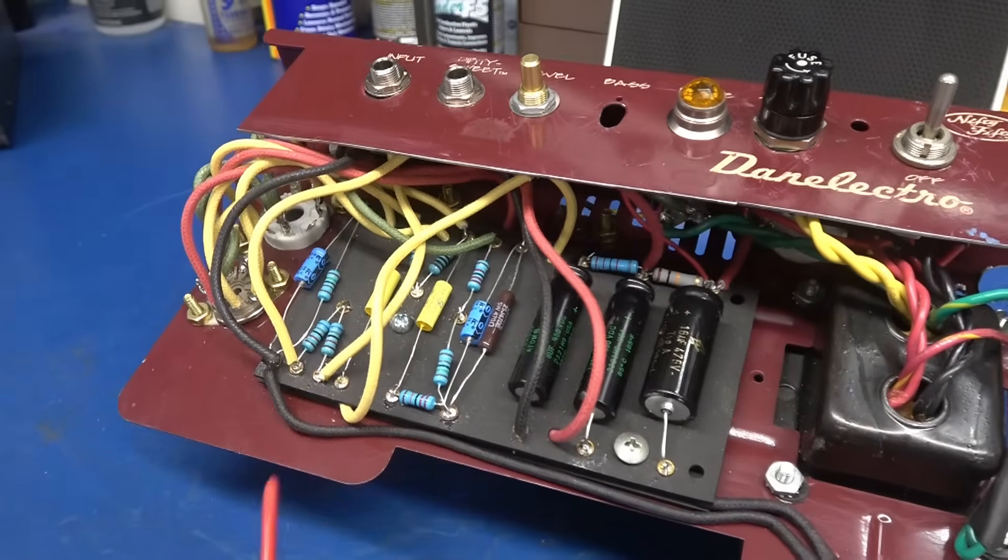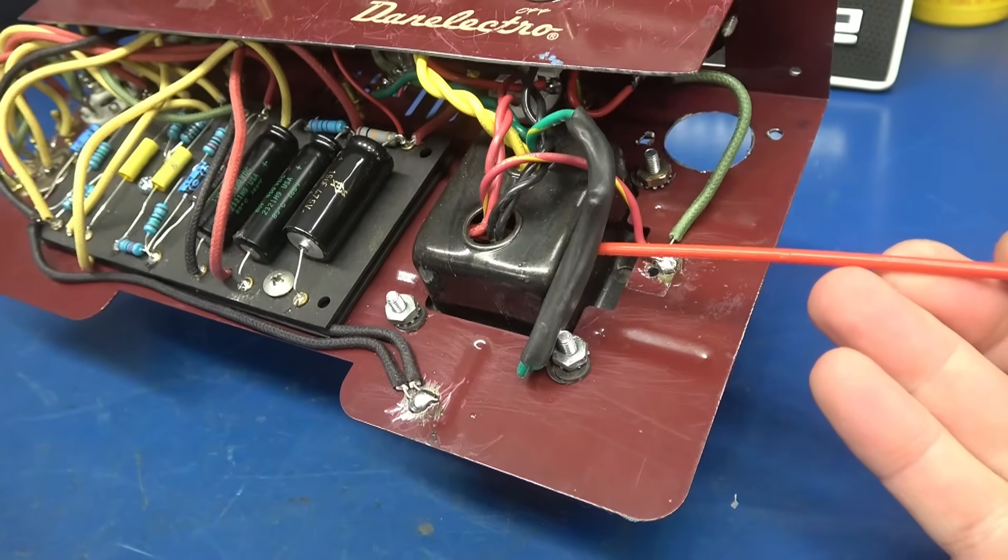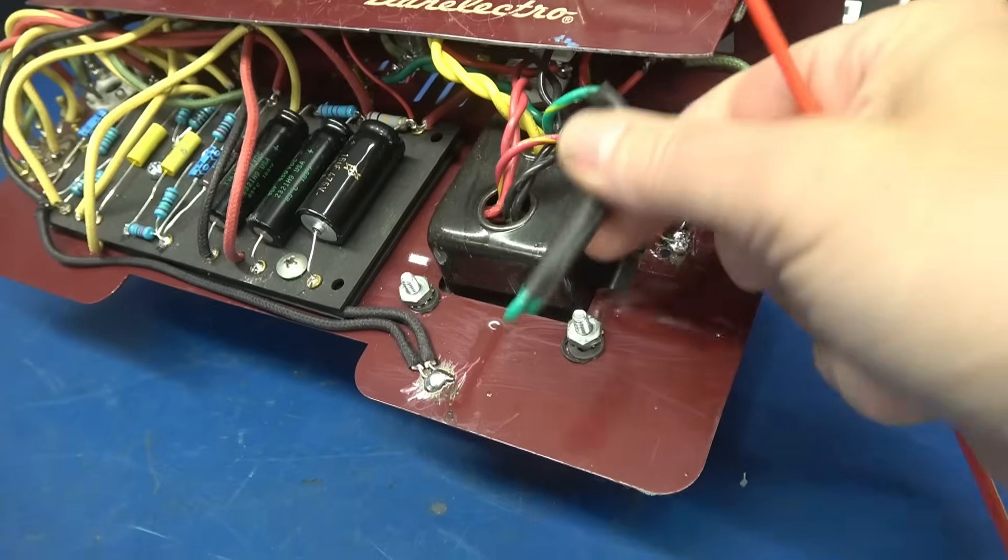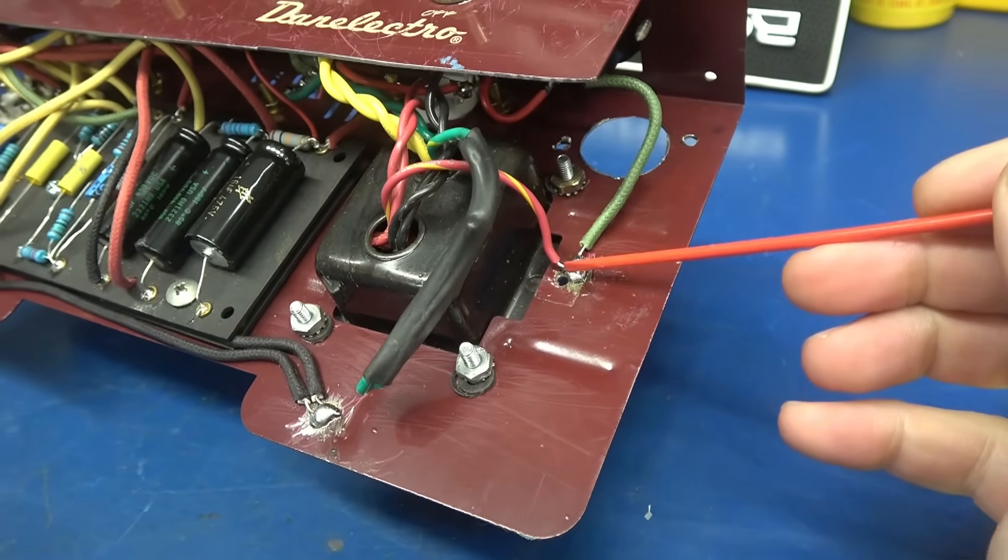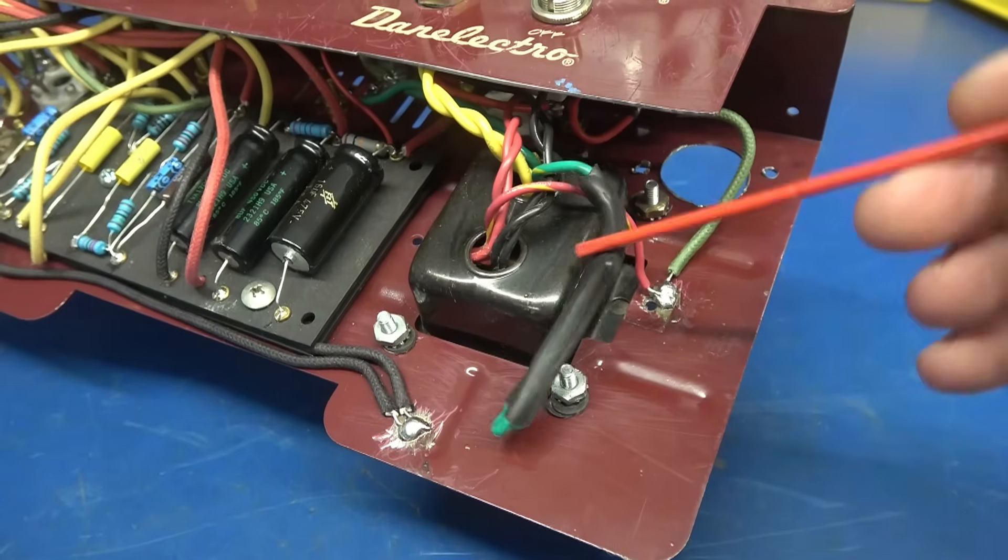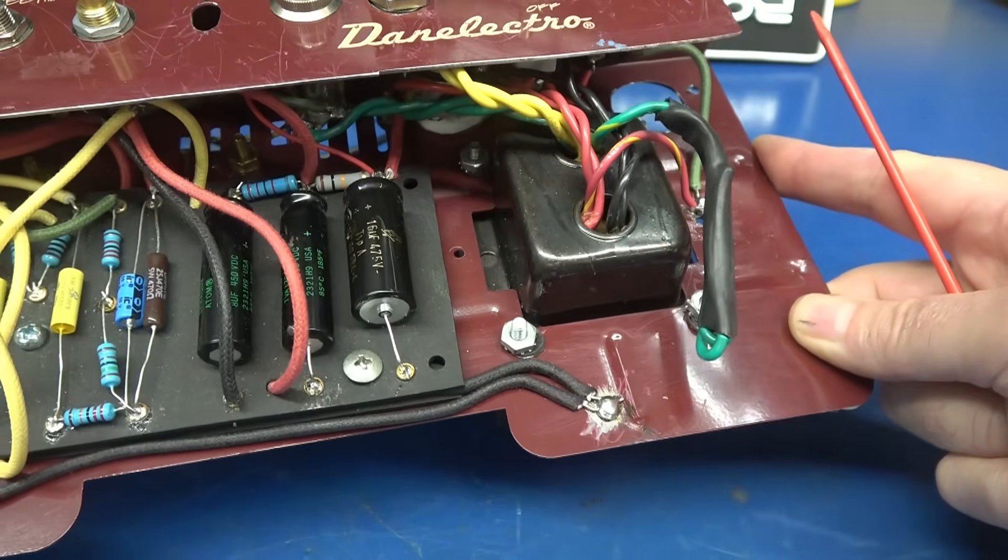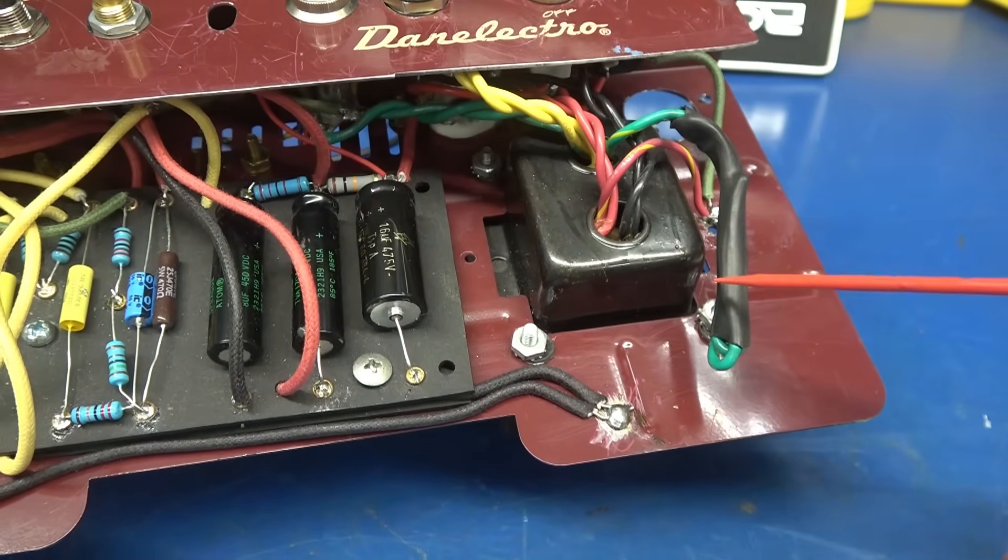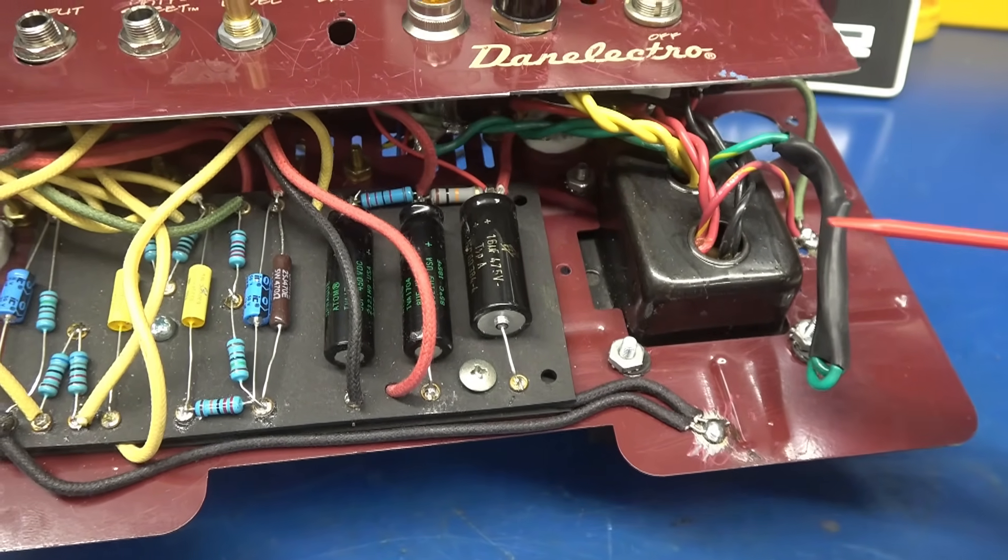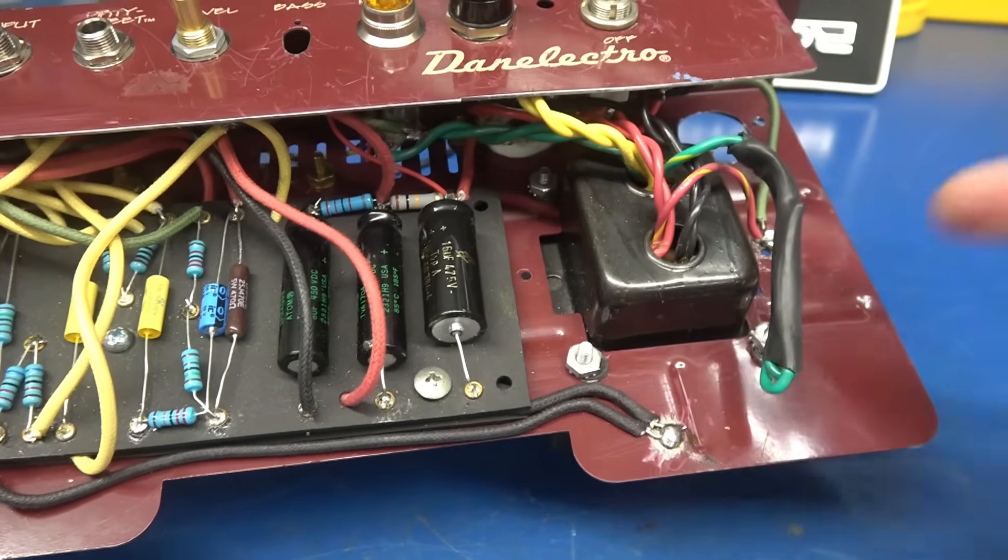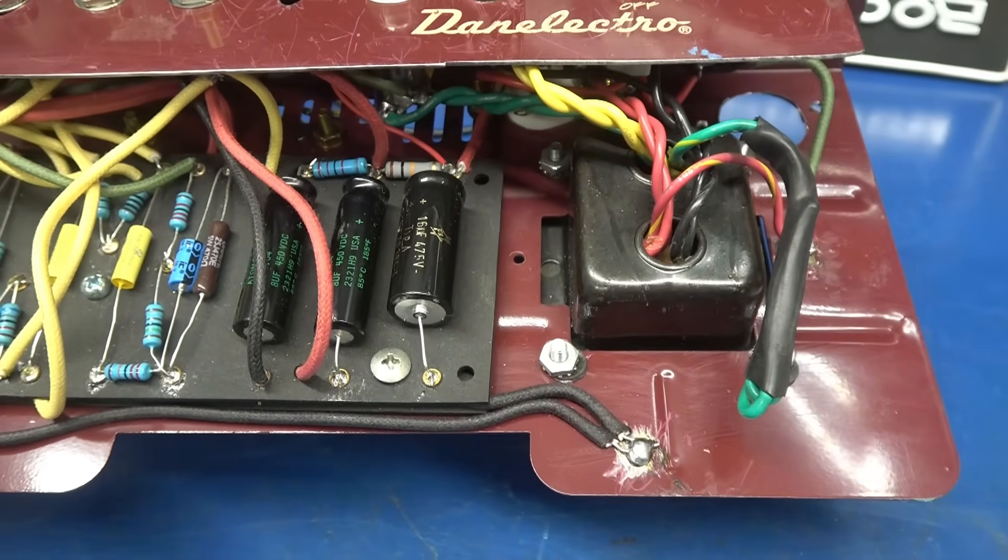Now we'll swing over here to the power supply section. I noticed that the center tap of the filament line has been capped off. Should be down here with the other center tap for the high voltage. If you don't use that center tap, you should be using the 200 ohm resistor artificial ground system. Otherwise, you'll get all kinds of buzz in your amp. Those resistors aren't there. So this center tap needs to be hooked up, but we'll take care of that later.